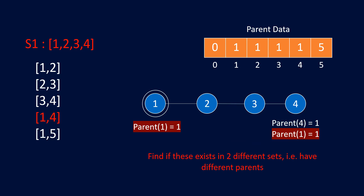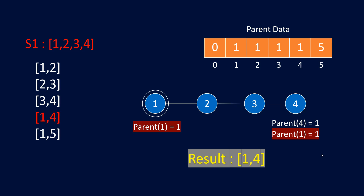Now for edge (1,4): the parent of node 1 is 1, and the parent of node 4 is 1. So both belong to the same set — their root is the same. Combining these two will form a cycle. So this is indeed the edge that was added afterwards to the tree, converting it into a graph with a cycle. Removing this edge gives us the tree representation of the graph.